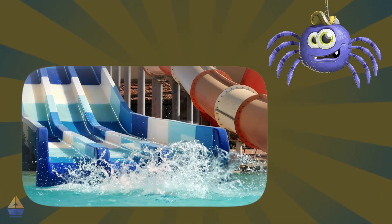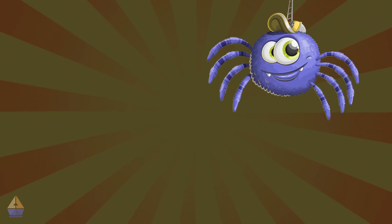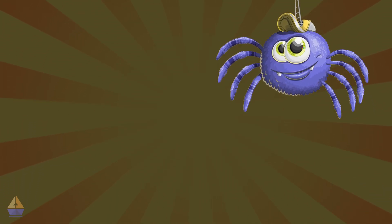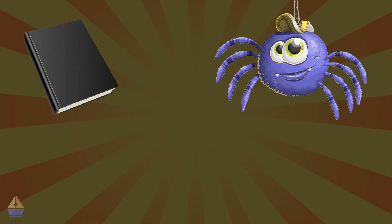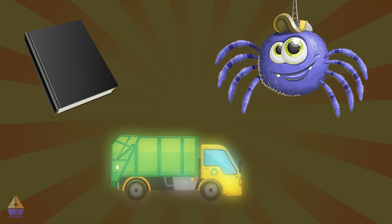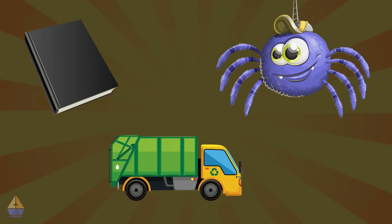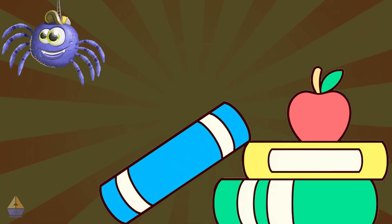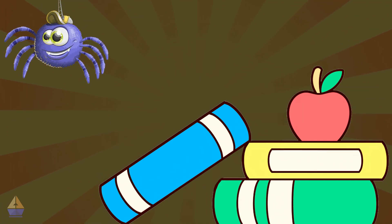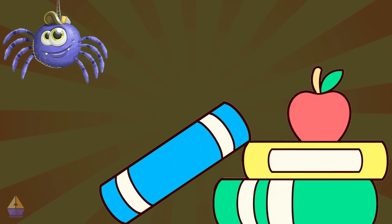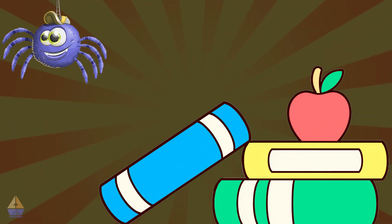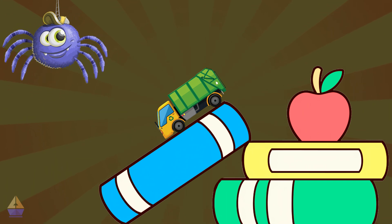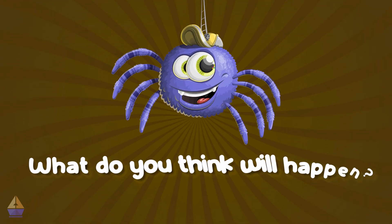Now let's do a fun experiment together. We're going to need some books to make a ramp and a toy car or a small ball. Follow these steps: first, stack the books to make a ramp; next, put the car or ball at the top of the ramp; finally, let it go. What do you think will happen?